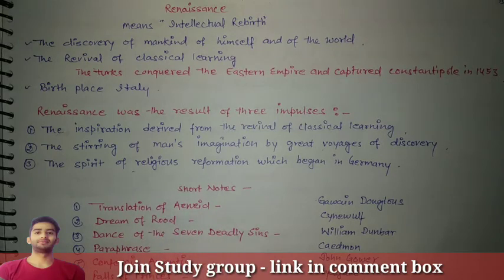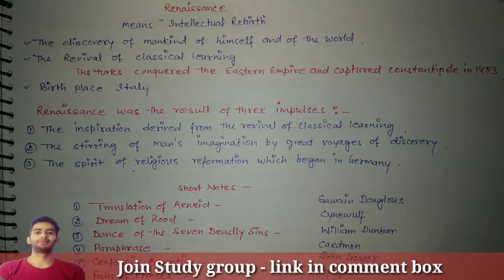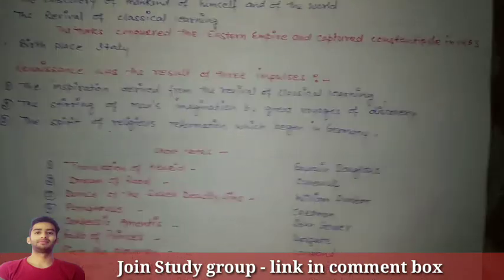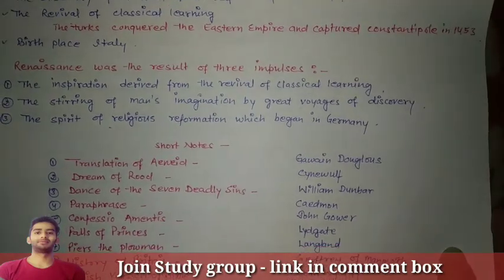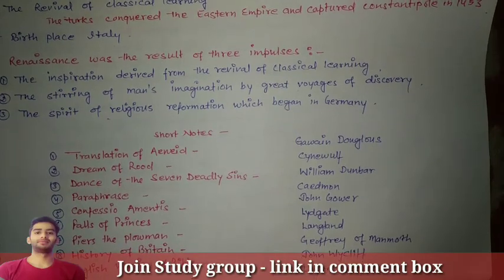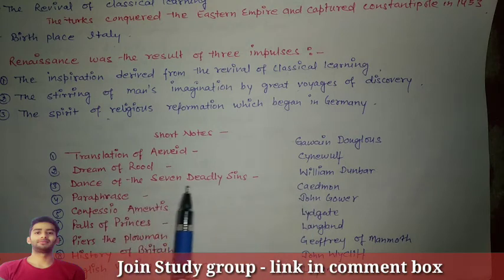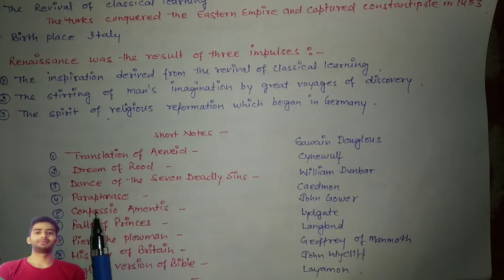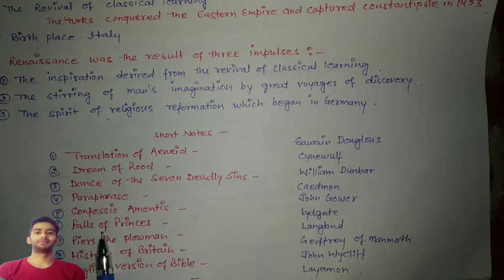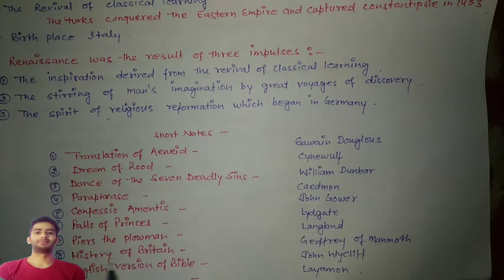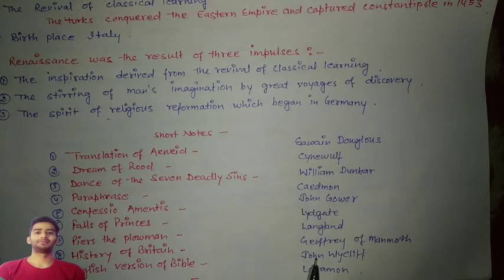Here are some short notes you should remember. Translation of the Aeneid — work by Gavin Douglas. Dream of the Rood — written by Cynewulf. Dance of the Seven Deadly Sins — William Dunbar. Paraphrase — Caedmon. Confessio Amantis — John Gower. Falls of Princes — Lydgate. Piers Plowman — Langland. History of Britain — Geoffrey of Monmouth. English version of the Bible — John Wycliffe. Brut — by Layamon.